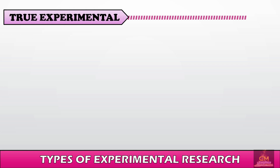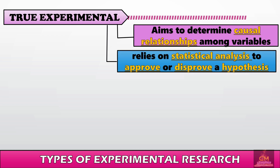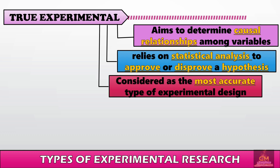We shall now discuss the different types of experimental research designs, starting with true experimental research. True experimental research aims to determine causal relationships among variables. It also relies on statistical analysis to approve or disprove hypotheses. It is considered the most accurate type of experimental design.